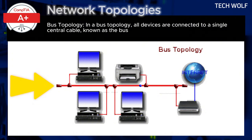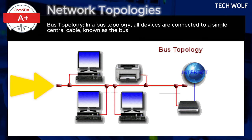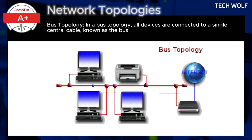The way it works is straightforward. Data is broadcast over the bus and each device checks if the message is intended for it. If not, the message continues down the line. One of the key benefits of this setup is its simplicity and cost effectiveness, particularly in small networks.